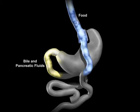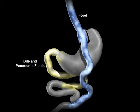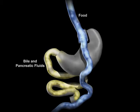The bile and pancreatic fluids from the liver and pancreas allow food to be completely digested. As with all weight loss procedures, behavior modification and dietary compliance plays a critical part in determining the long-term success of the procedure.